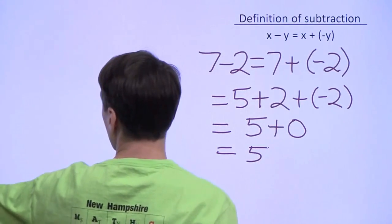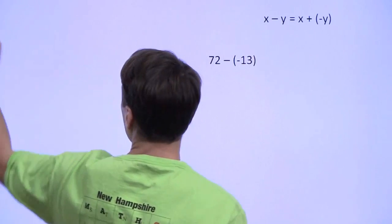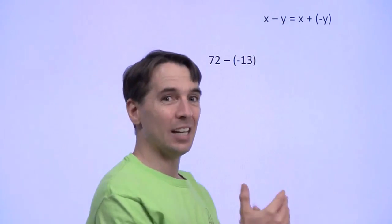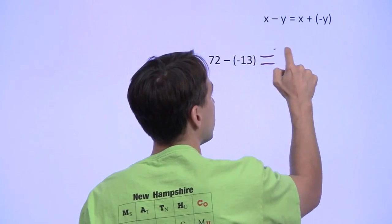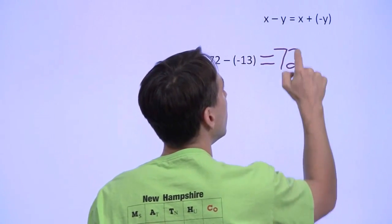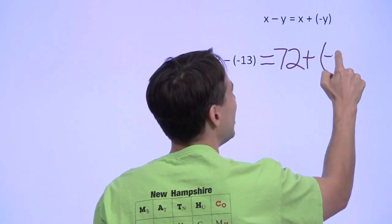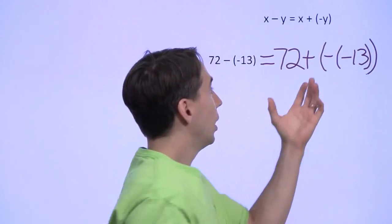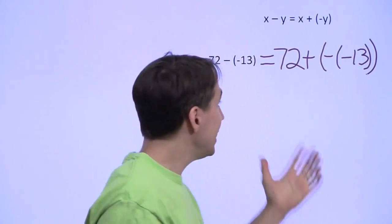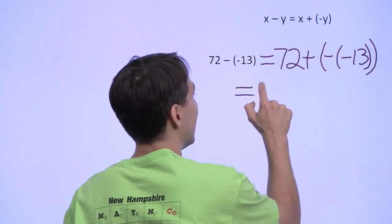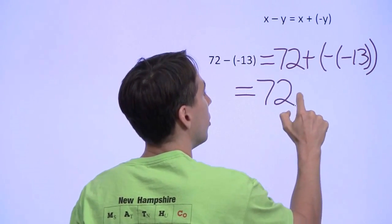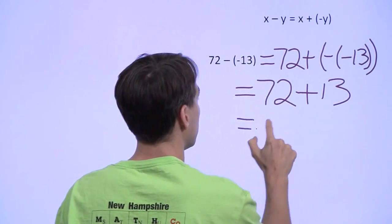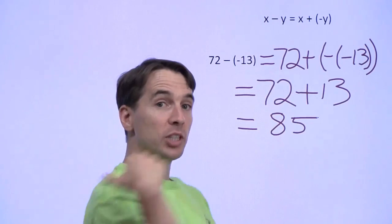Now let's try this definition of subtraction on those two problems we looked at at the beginning. If we have 72 minus negative 13, we use our definition—that gives us 72 plus the negation of negative 13. The negation of negative 13 is just 13, so those two negatives cancel. Two wrongs make a right here, and that leaves us with 72 plus 13 is 85.